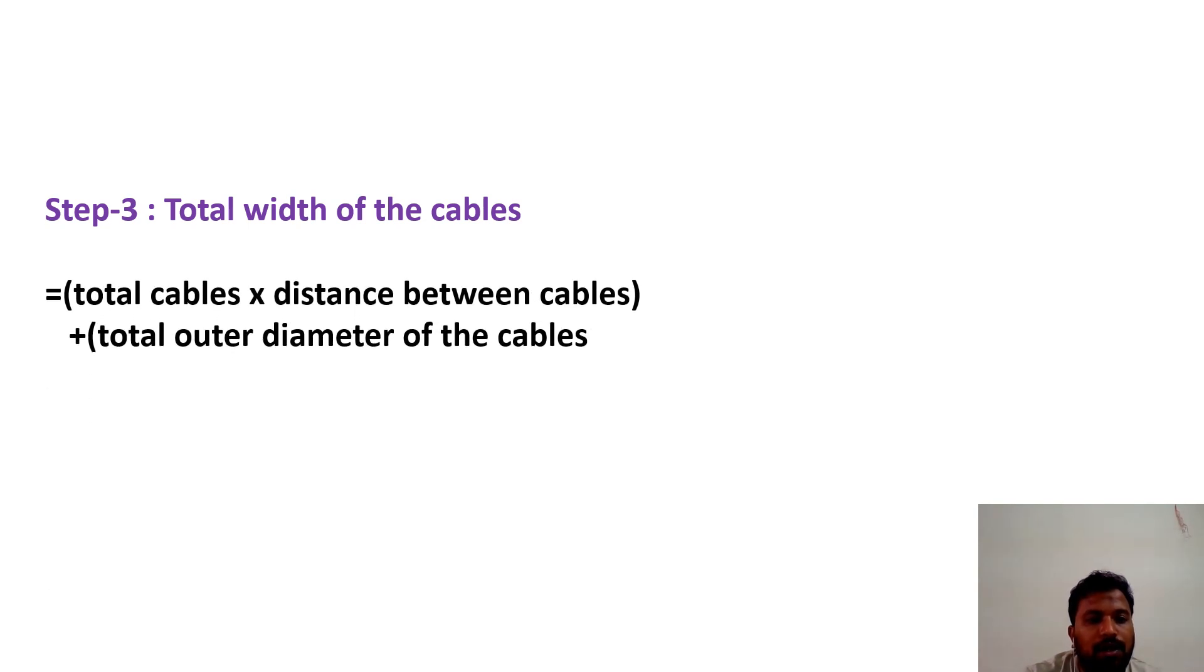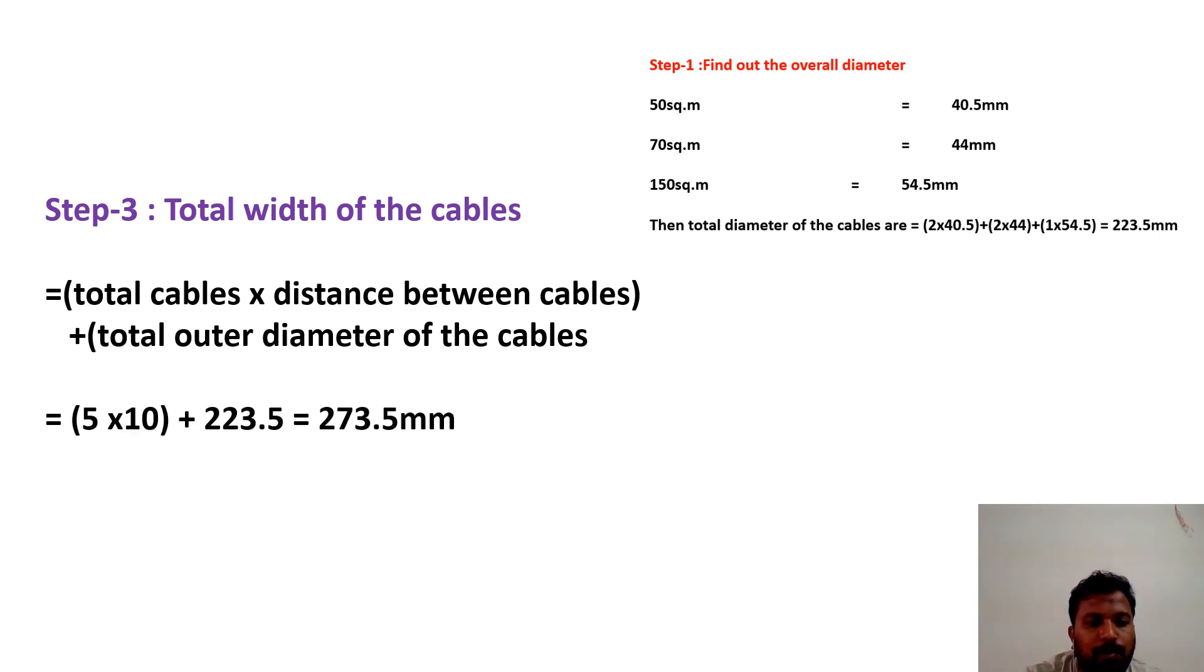What is the formula? Total cables into distance between the cables plus total outer diameter of the cables. From step 1, we got 223.5mm. How many cables we have? 2 number 50mm, 2 number 70mm, 1 number 150mm. Total 5 cables. Distance between the cables, in the example they say 10mm. Total number of cables, 5 into 10mm, this is the distance between the cables.